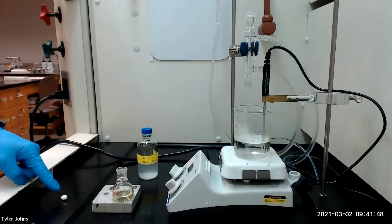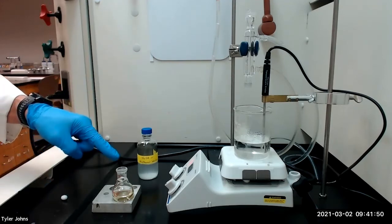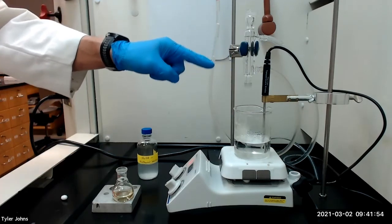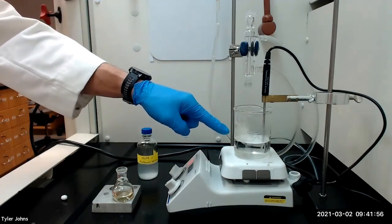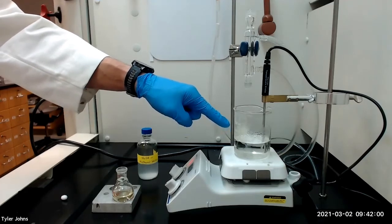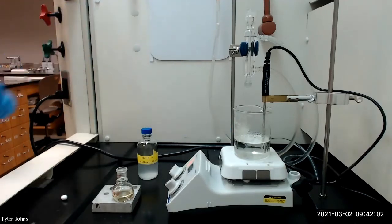We will then place a stir bar in the round bottom flask and attach the flask to a water-cooled condenser. We will then clamp the condenser so that the round bottom flask is nearly submerged in a 55 to 60 degrees Celsius hot water bath and then we will stir the mixture vigorously for 30 minutes.